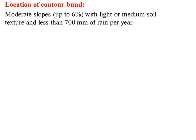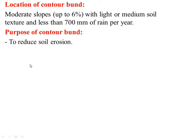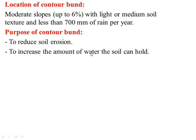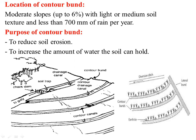Contour bunds are located on moderate slopes up to 6%, with light or medium soil texture and less than 700 mm of rainfall per year. The purpose of contour bunds is to reduce soil erosion and to increase the amount of water the soil can hold.